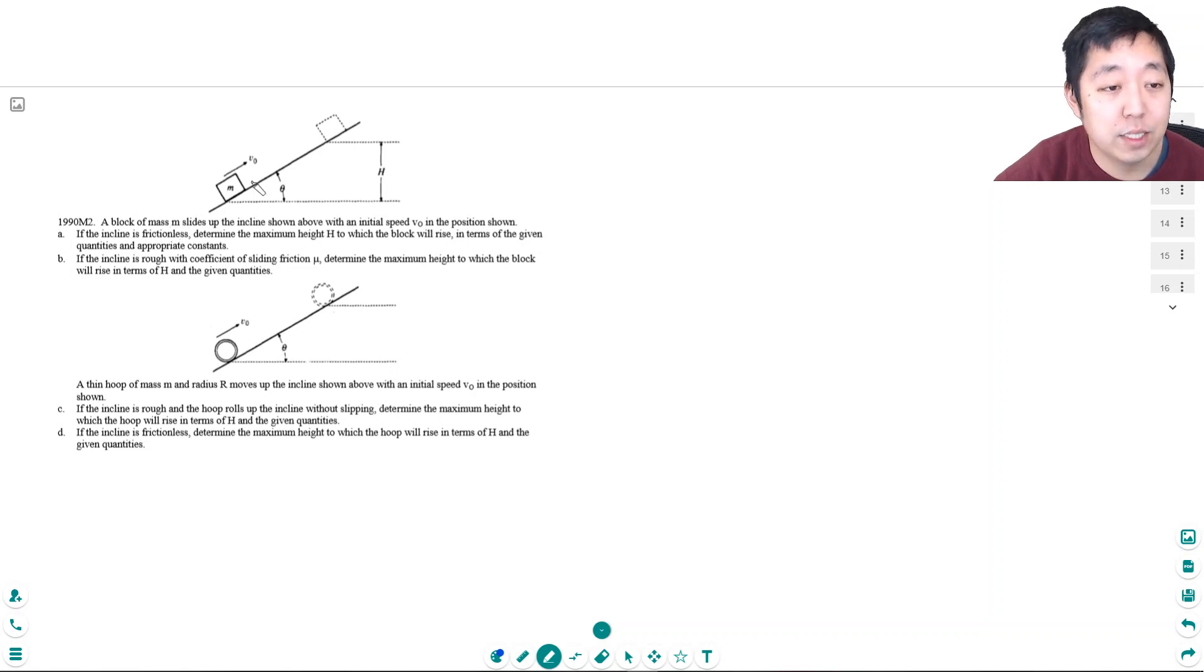So a block of mass m slides up the incline shown above with initial speed v0 in the position shown. If the incline is frictionless, determine the maximum height h to which the block will rise in terms of the given quantities and appropriate constants. Okay, so this is a simple energy conversion.